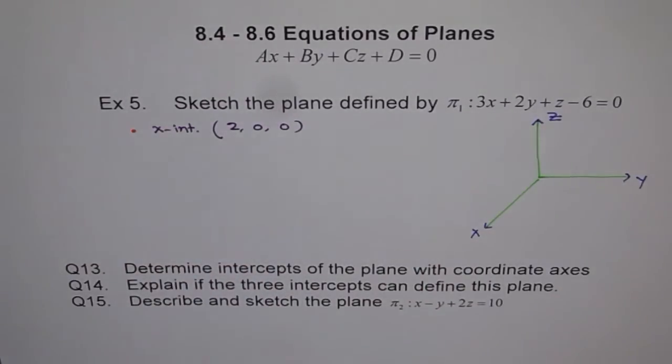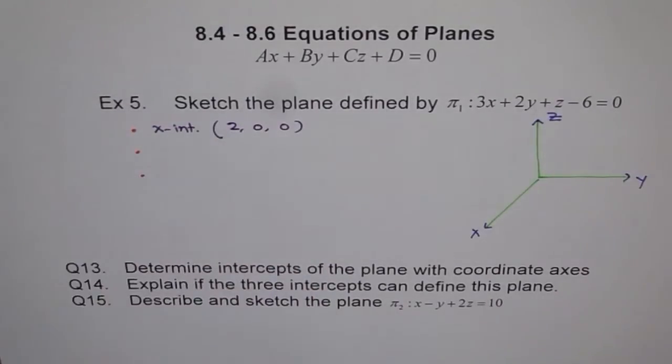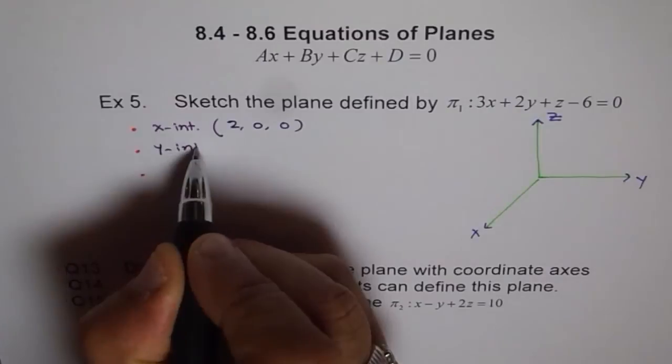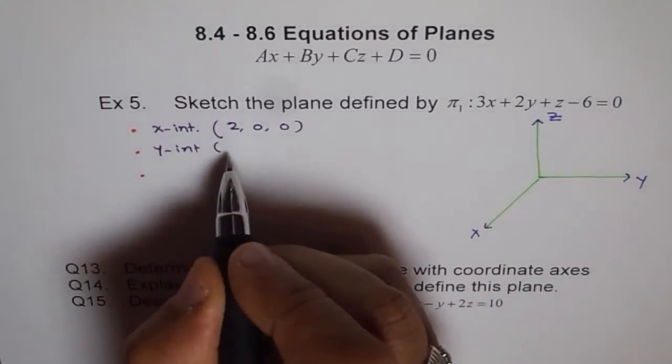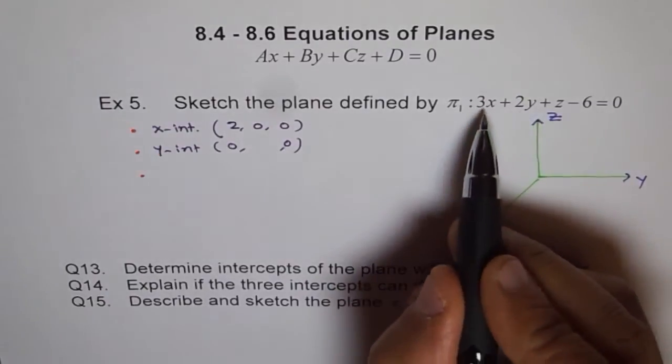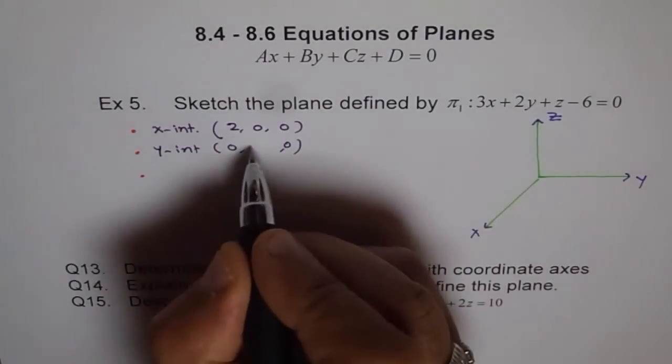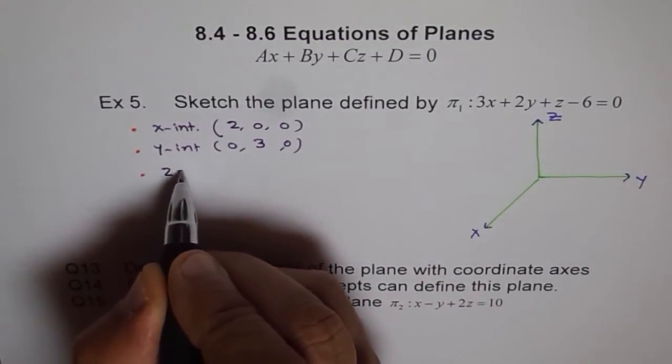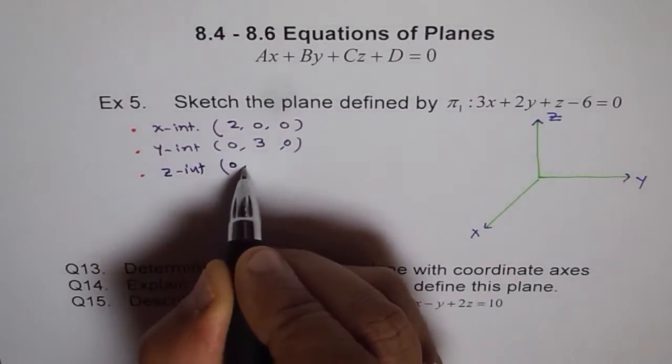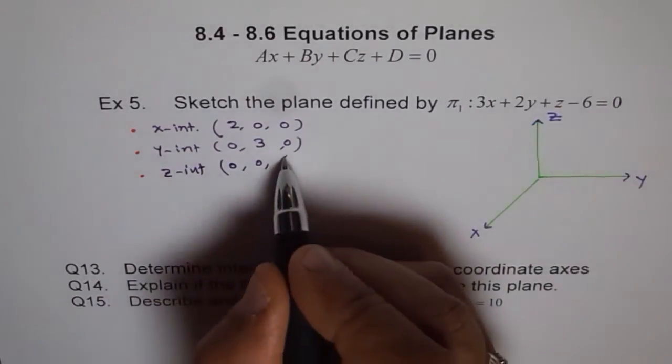Now, similarly, let's calculate y and z-intercepts. So, let's calculate y-intercept. For y-intercept, we'll put x and z 0 and calculate for y. If these 2 are 0, then 2y equals to 6 or y equals to 3. So, we get 3 here. Now, the z-intercept. For z, we'll put x and y as 0 and z equals to 6.